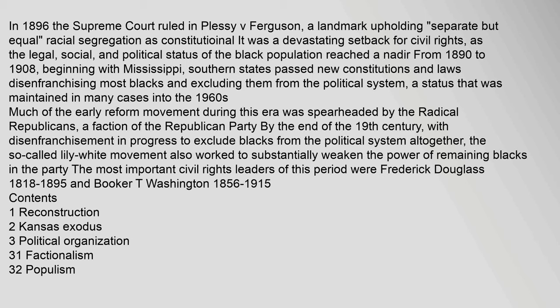By the end of the 19th century, with disenfranchisement in progress to exclude blacks from the political system altogether, the so-called Lily White movement also worked to substantially weaken the power of remaining blacks in the party. The most important civil rights leaders of this period were Frederick Douglass (1818–1895) and Booker T. Washington (1856–1915).